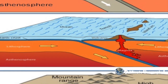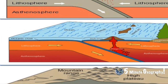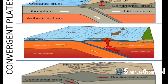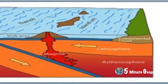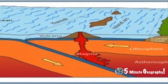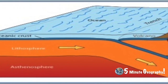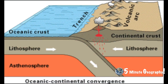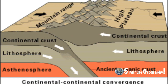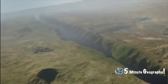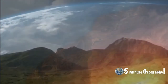There are three types of convergent plate boundaries. An oceanic tectonic plate can converge with another oceanic tectonic plate. An oceanic plate can collide with a continental plate. And finally, and perhaps most destructive, a continental plate can also collide with another continental plate.